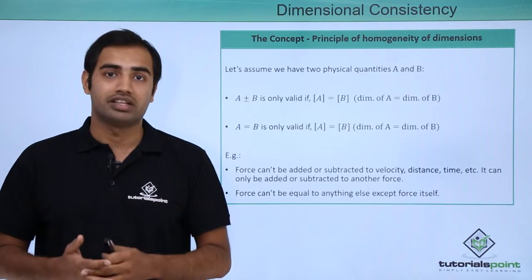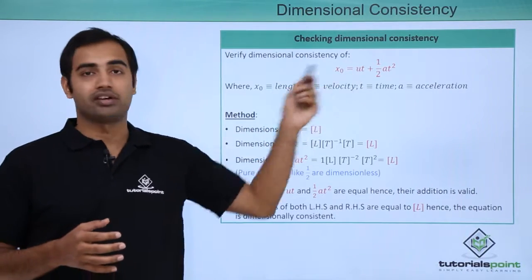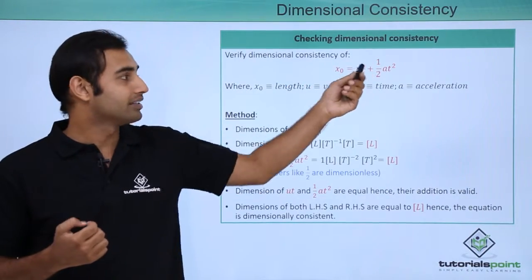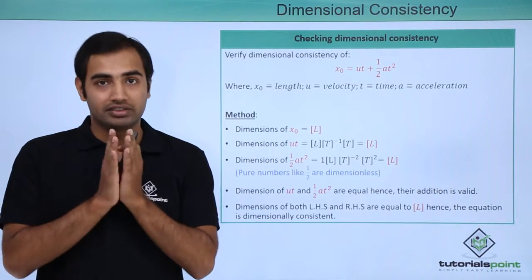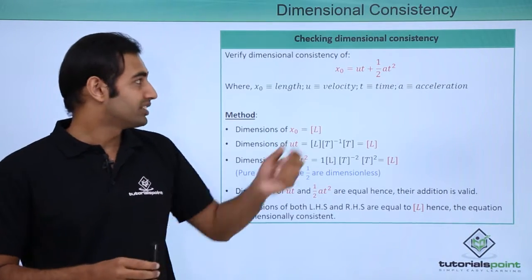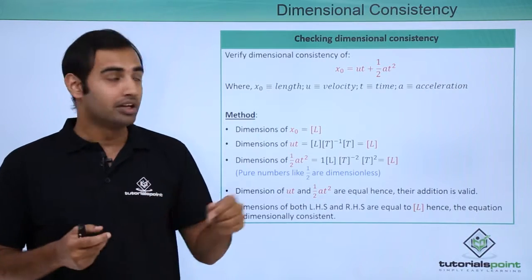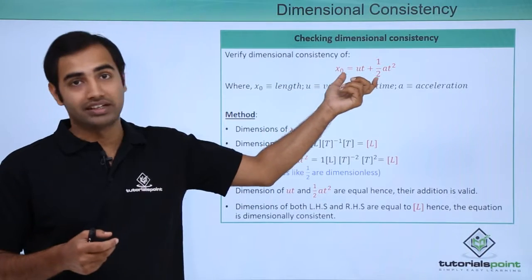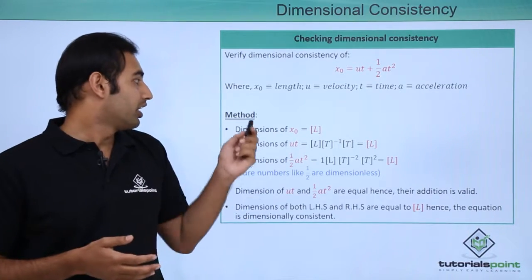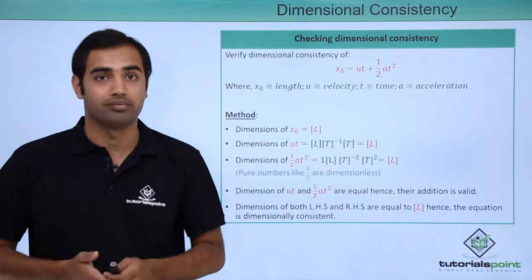Now we will verify this idea using a physical equation. We have the kinematics equation: x₀ = ut + ½at². Here x₀ is displacement, u is velocity, t is time, and a is acceleration. We will verify the dimensional consistency of this equation. The rules state that ut and ½at² must have the same dimensions to be added, and x₀ must have the same dimensions as the entire right-hand side. Starting with the LHS, x₀ is displacement and its dimension is simply L.